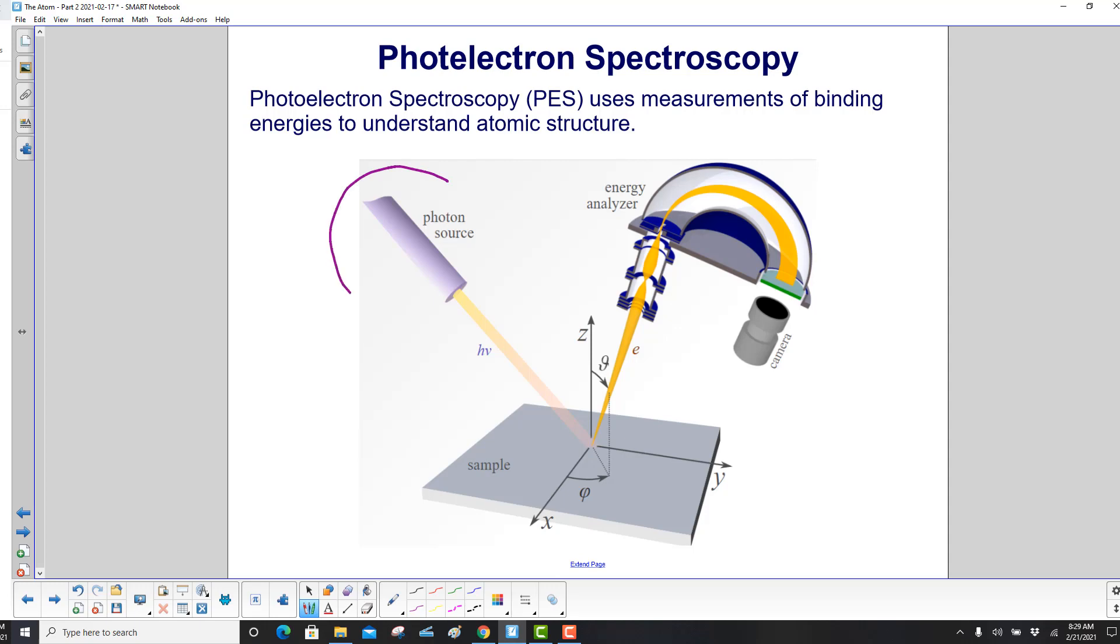A simple picture here is we have a photon source hitting our sample and then electrons come out and they're put into this energy analyzer. And here we have a camera to take pictures of the results.